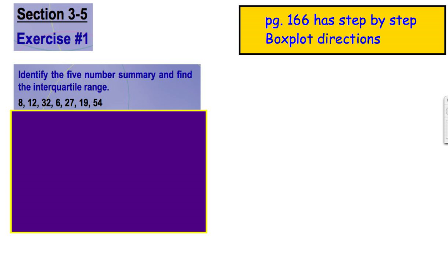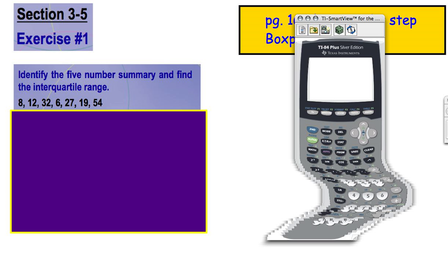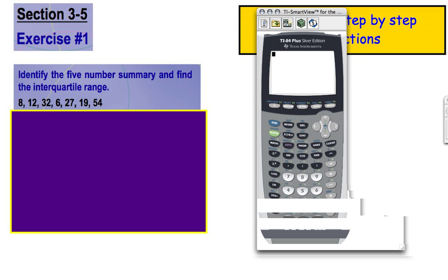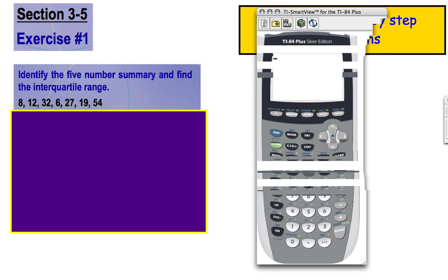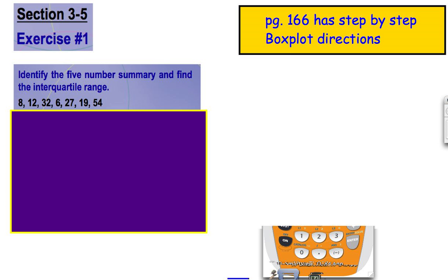The main thing you will have to make sure you do is clear your list before you get started. So we are going to use a graphing calculator to find our five number summary and our interquartile range. Let's go ahead and pull up our graphing calculator, and I'm going to make that just a little bit bigger.